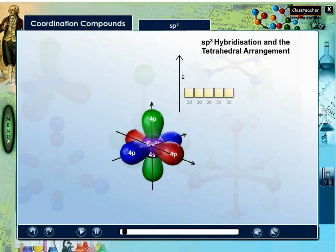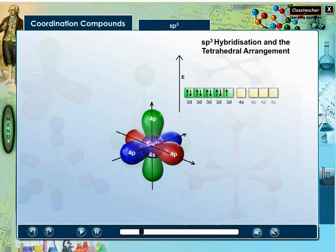In tetrachloro-copper complex, the copper-2-ion hybridizes its 4s and 4p orbitals to form four equivalent sp3 hybrid orbitals.